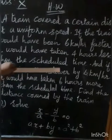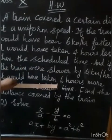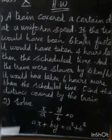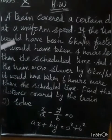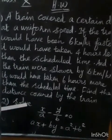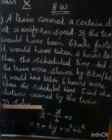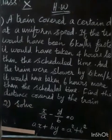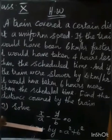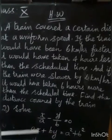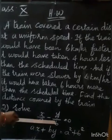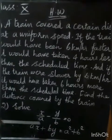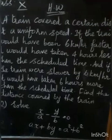Setting up: distance equals XY. First condition: speed X plus 6, time Y minus 4. Second equation setup follows the same method. Also solve: X by A minus Y by B equals 0 and AX plus BY equals A squared plus B squared.